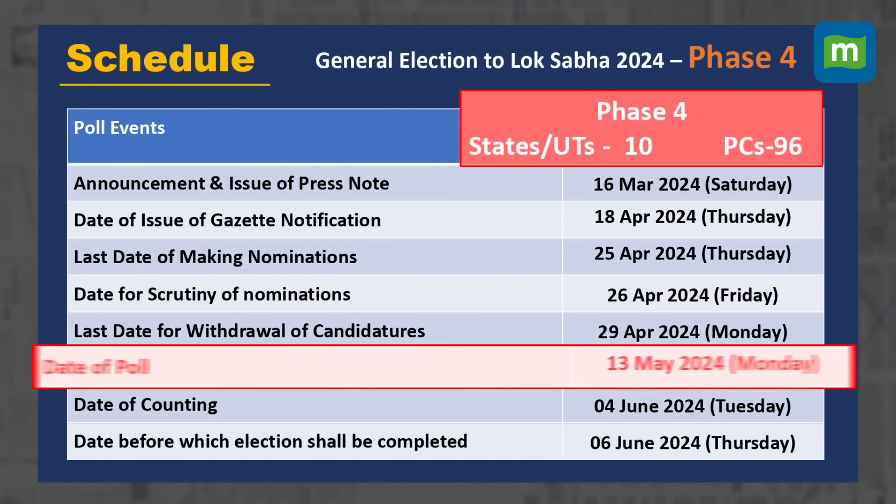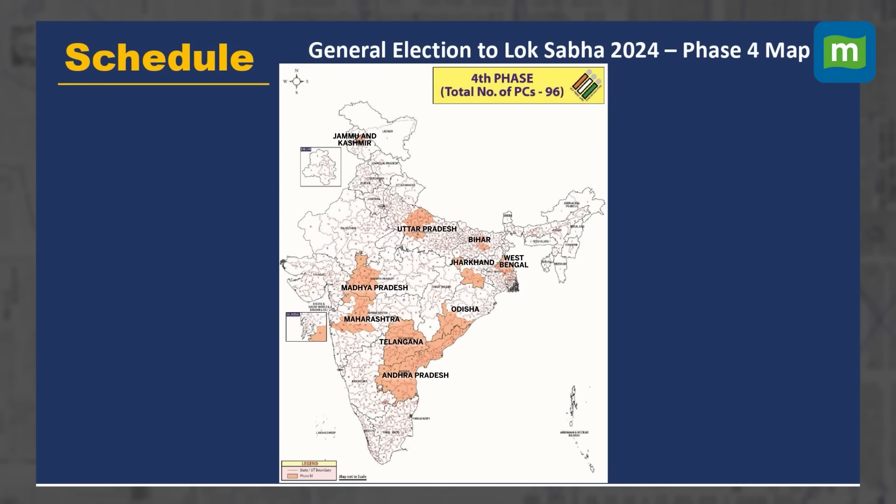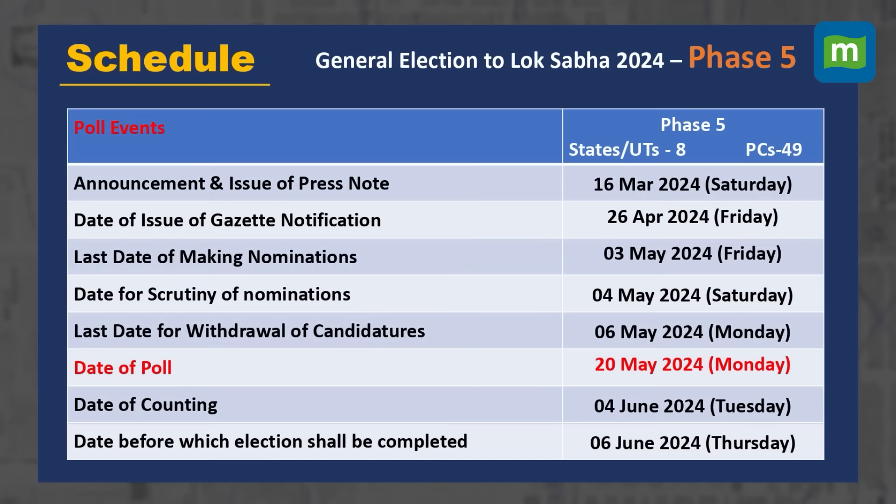Polling of phase 4 will be conducted on 13th May 2024, under which 96 parliamentary constituencies of 10 states and union territories will go for polls. Under phase 4, polling will be conducted in parliamentary constituencies of Jammu and Kashmir, Uttar Pradesh, Madhya Pradesh, Maharashtra, Telangana, Andhra Pradesh, Odisha, Bihar, Jharkhand and West Bengal.